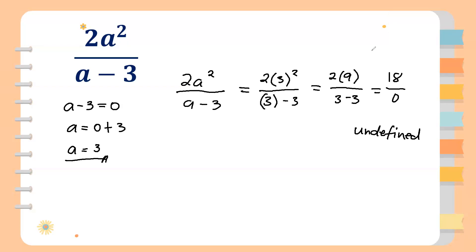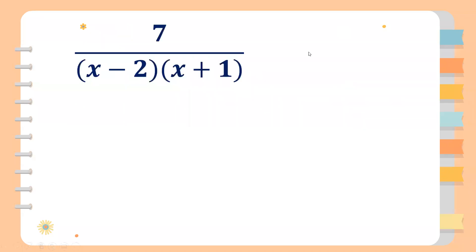Let's have another example. For example, we have 7 over the quantity of x minus 2 times the quantity of x plus 1. Now, since we have 2 expressions, we will have 2 possible values. So we have x minus 2 and x plus 1. We equate both of them to zero. So x minus 2 equals 0, and x plus 1 equals 0.